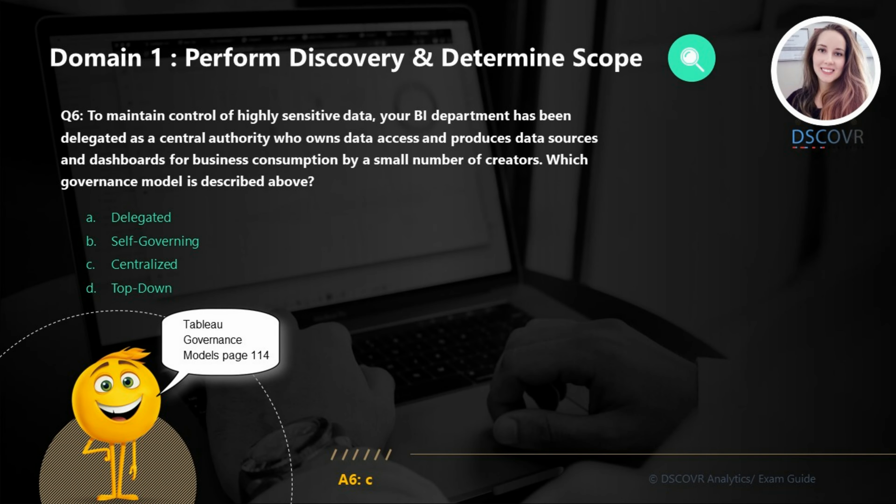Let's take a look at the scenario described in question number six. To maintain control of highly sensitive data, your BI department has been delegated as a central authority who owns data access and produces data sources and dashboards for business consumption by a small number of creators. Which governance model is being described? We have three primary governance models: Centralized, Delegated, and Self-Governing. In the scenario described, we are referencing a centralized model in which a single authority — like an IT department or BI team — produces all the content for the business in a one-to-many relationship. Typically you only have a few creator licenses and everyone else is licensed as a viewer. Make sure you know the difference between the governance models described in the Tableau Blueprint.